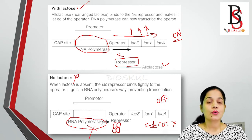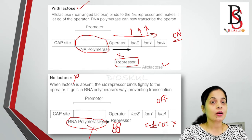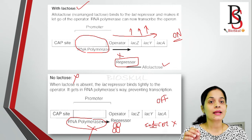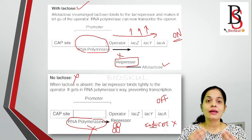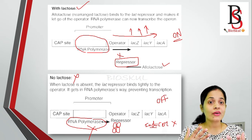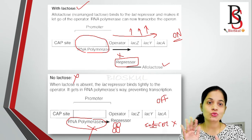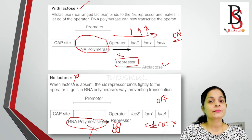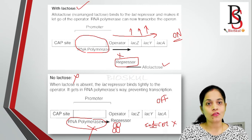In summary, when lactose is present in the media the lac operon turns on, helping in the catabolism of lactose. When lactose is absent, there is no need to activate the genes required for lactose catabolism, so the lac operon is off.